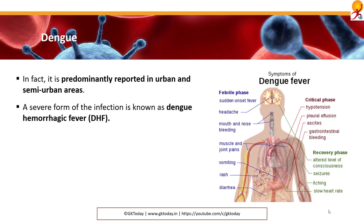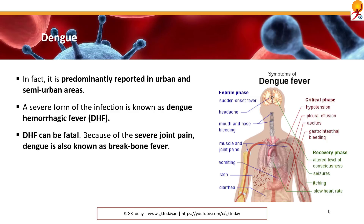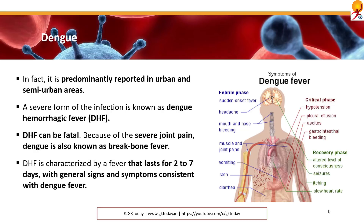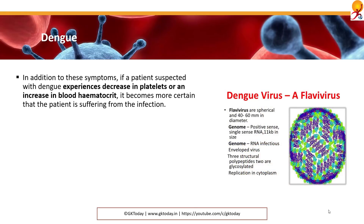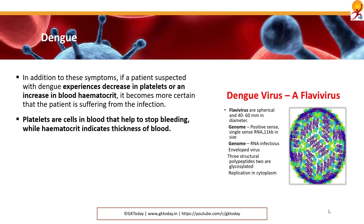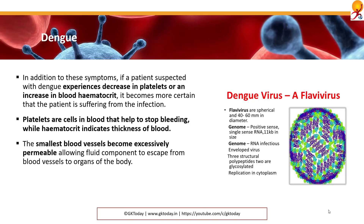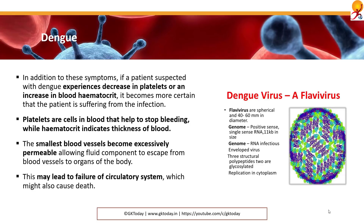A severe form of infection is known as dengue hemorrhagic fever or DHF, which can be fatal and causes severe joint pain, so it's also known as break-bone fever. DHF is characterized by a fever lasting two to seven days. If a patient suspected of dengue experiences a decrease in platelets or an increase in blood hematocrit, it becomes more certain they are suffering from infection. Platelets are cells in blood that help stop bleeding, while hematocrit indicates the thickness of blood. The smallest blood vessels become excessively permeable, allowing fluid components to escape from blood vessels into organs, leading to failure of the circulatory system, which might also cause death.